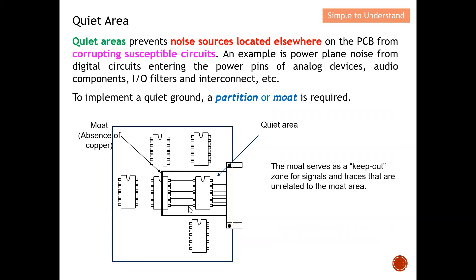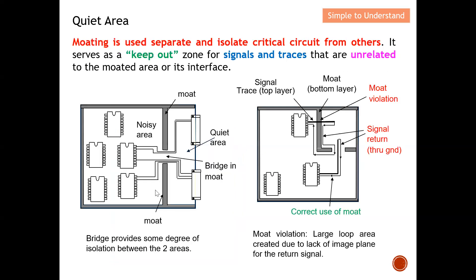For example, these are all the I/O lines which are very vulnerable to noise sources, so I put them into a quiet zone. Any other traces will not be able to enter into this quiet area because they may incur coupling. The key purpose of this moat is to ensure that unrelated traces will not run into this space. The moat serves as a keep-out zone for signals and traces that are unrelated to the moat area — anything unrelated will not be able to enter the quiet area.